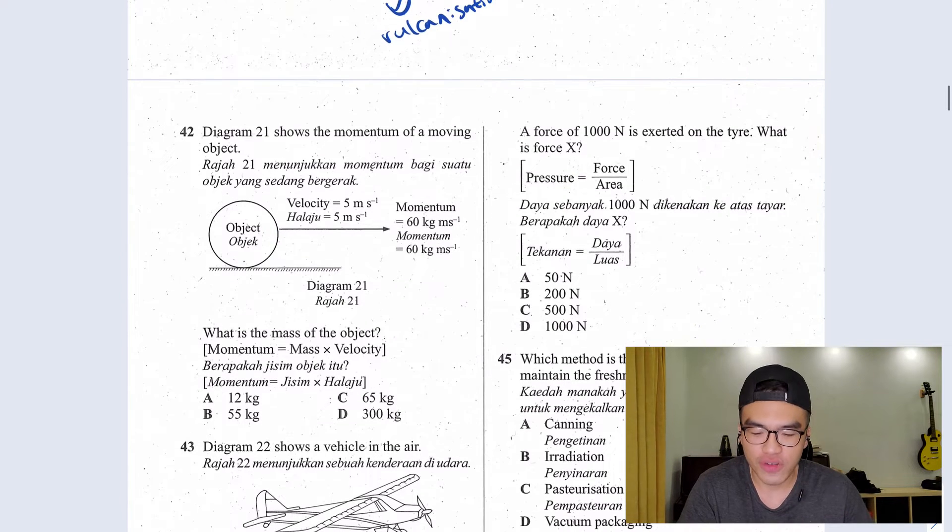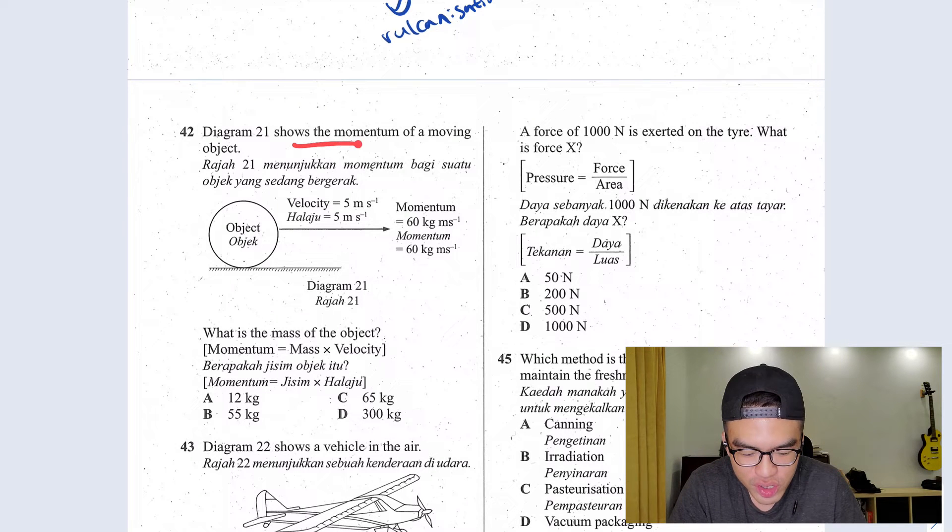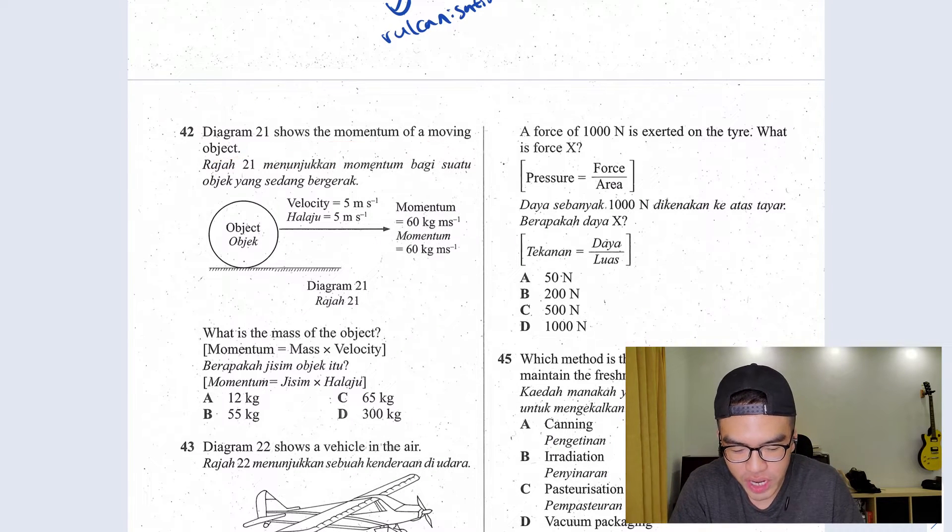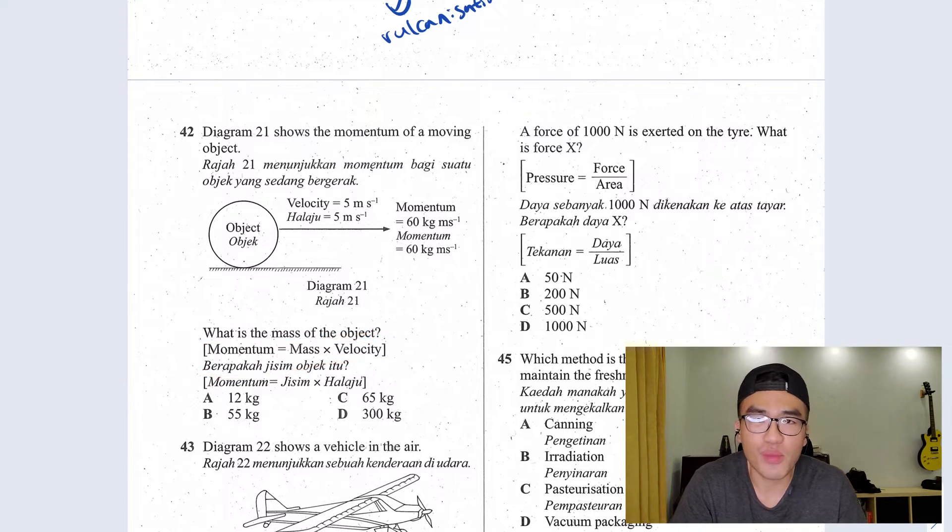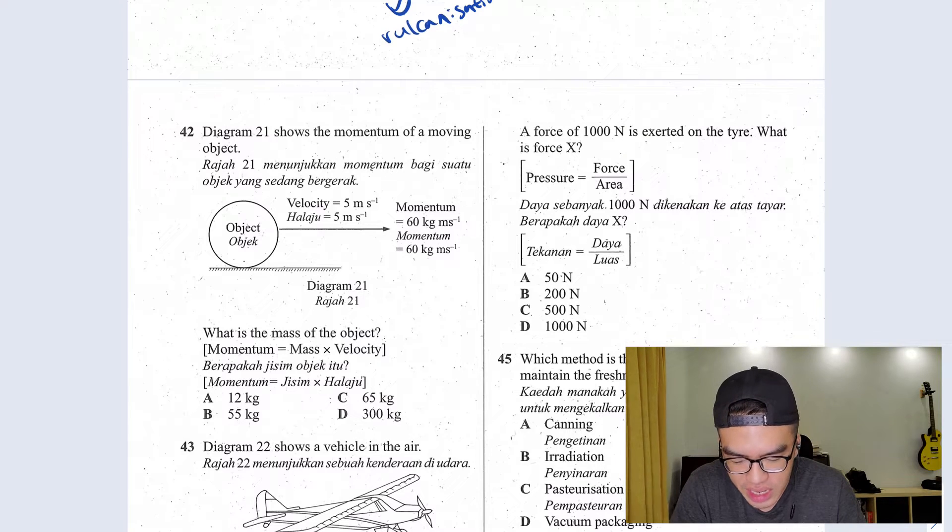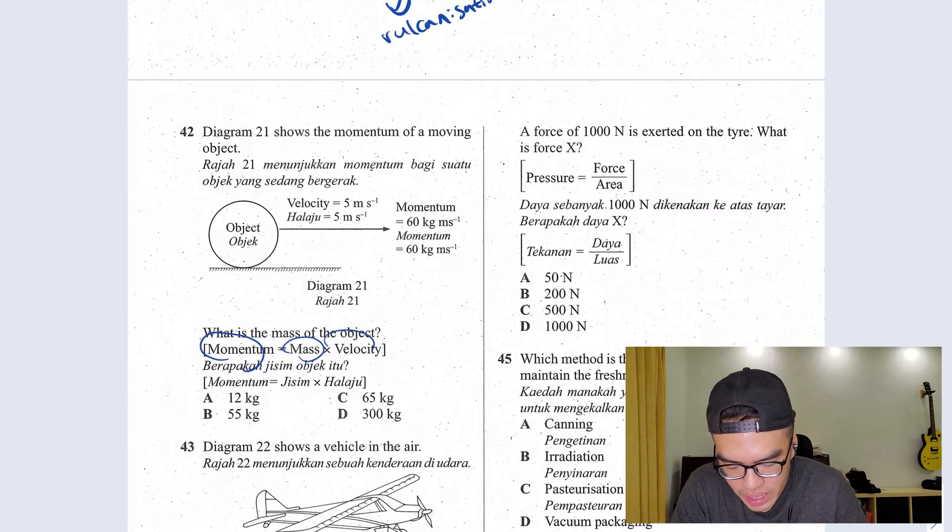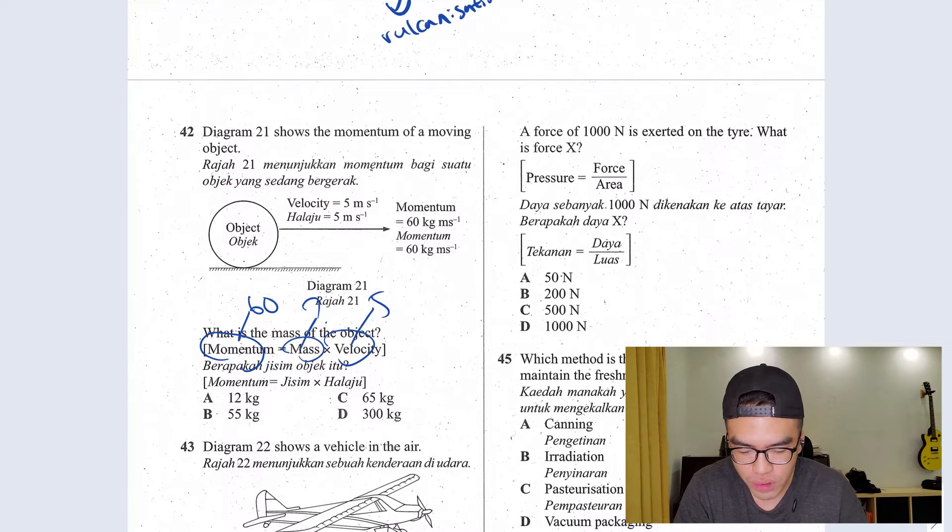Question 42, there we have our momentum question. Shows the momentum of a moving object. So what is the mass of the object? As you can see here, they give you the formula here again, so don't you worry about memorizing the formulas. They have your momentum equals to mass times velocity. The momentum here is 60, velocity is 5, mass we don't know. When you move times into the other side, you get divide, so you have 60 divided by 5, you should get 12.